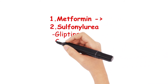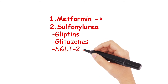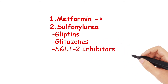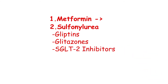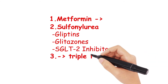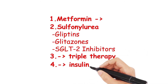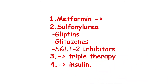The additional agents for dual therapy include a sulfonylurea, gliptins, glitazones, or SGLT2 inhibitors. Despite this, if the HbA1c continues to rise above 7.5%, then a third agent would need to be considered. Failing this, discussion about the initiation of insulin may be needed.